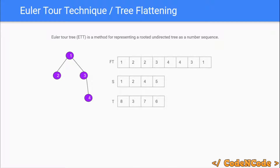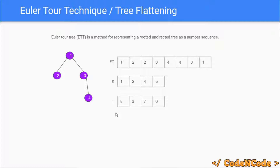The Euler tour represents the whole tree as a sequence of numbers — a simple array — so we can apply techniques like segment tree and square root decomposition. We are studying it for the Mo's algorithm, which is square root decomposition and queries. We have a starting time, which is the time at which you enter a node, and a terminating time, which is the time when you leave that node.